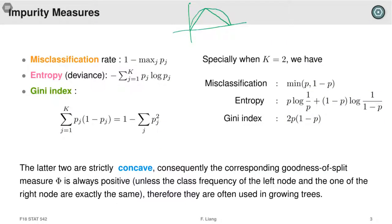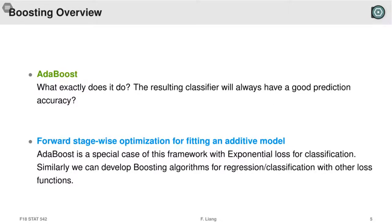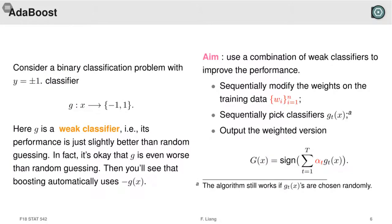Then we switched to talk about boosting, because it's difficult for a single tree to work well. The idea of boosting is to find a crowd — hopefully a crowd works better than individuals. The individuals are what we call weak classifiers; we don't try too hard to pick a good classifier. G could be any classifier and is actually randomly chosen. We sequentially pick classifiers G sub t, then combine them using weights alpha_t. Because our label y is 1 or minus 1, the final classification is the sign of the linear combination.